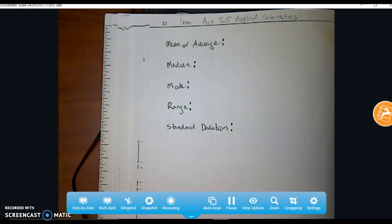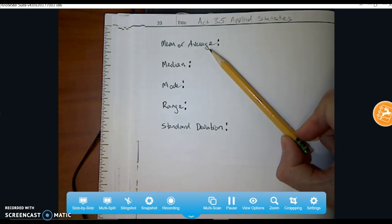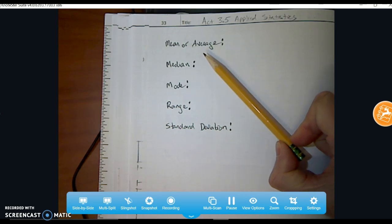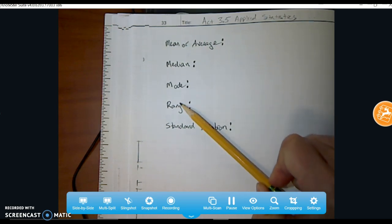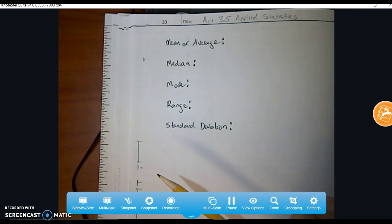First thing I want you to do, though, is I want you to define these terms. And you can Google them, mean or average, median, mode, range, and standard deviation.